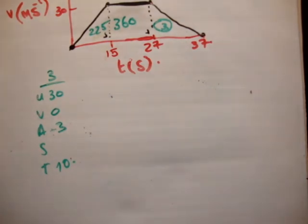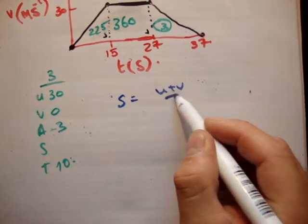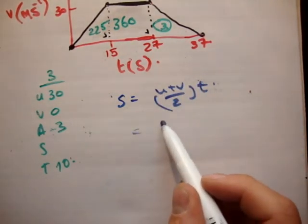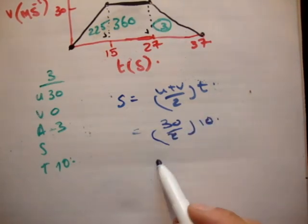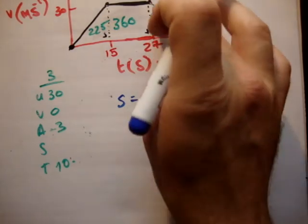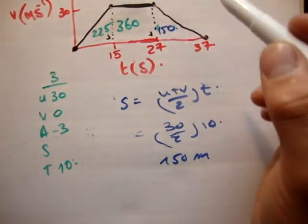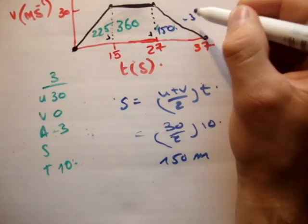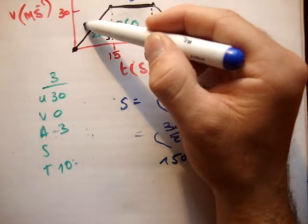And if we go for the distance, this is something we're well used to. U plus v over 2 times t is equal to 30 over 2 times 10, 150 meters. So we know that the deceleration is negative 3. We know that the acceleration here is equal to zero and it's positive 2.